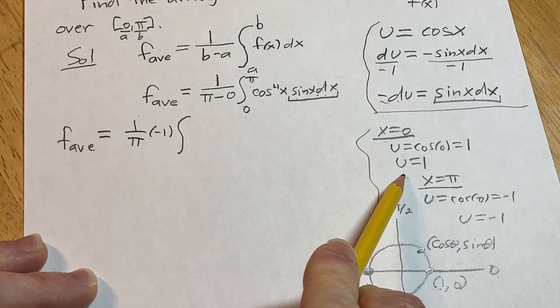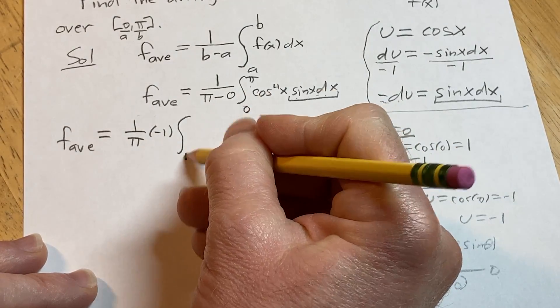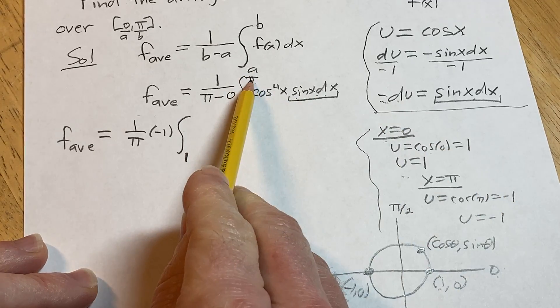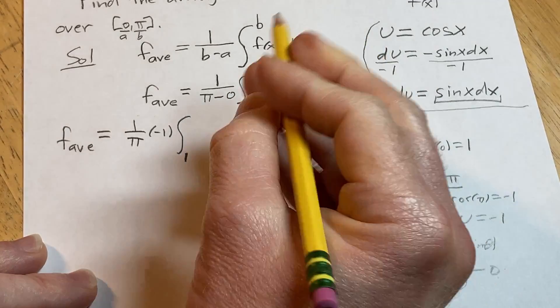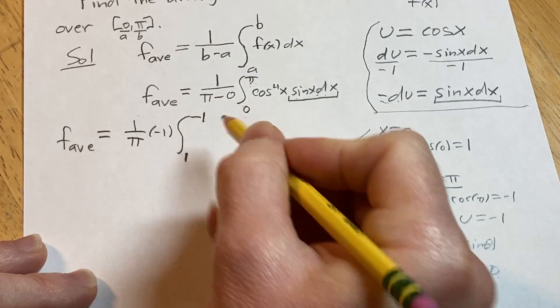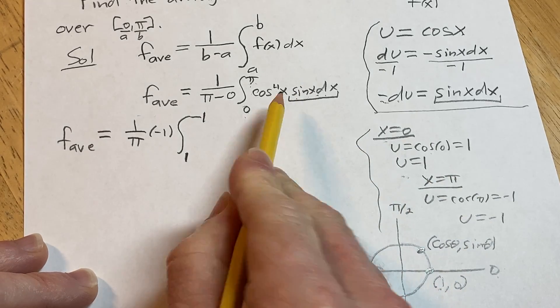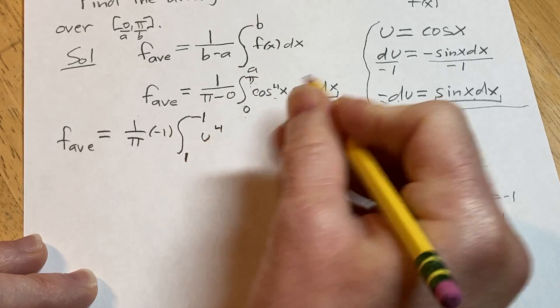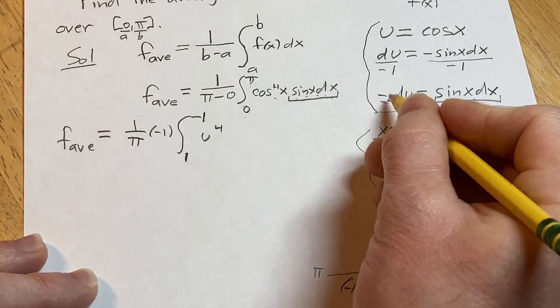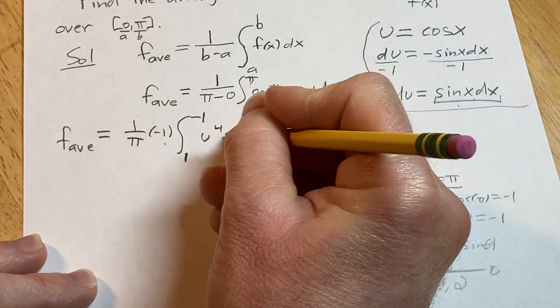But when x is 0, u is 1, so we're going to put a 1 here. And when x is pi, u is negative 1, so we're going to put a negative 1 here. And then here we have u to the fourth power. And the sine x dx, well we said that was negative du. We already took out the negative sign, so that's just du.